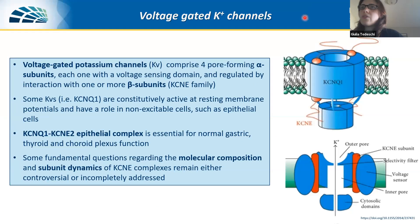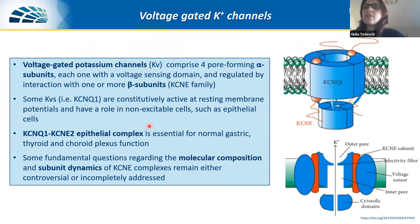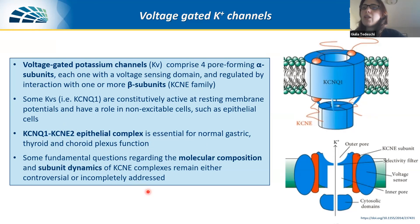A brief introduction to the voltage-gated potassium channel: they are formed by four alpha subunits, each with a voltage sensing domain, and they are regulated by one or more beta subunits. The channel we are interested in, KCNQ1, is constitutively active at resting membrane potentials and has a role in epithelial cells. The complex we studied — KCNQ1 as the main subunit and KCNE2 as a beta subunit from the KCNE family — is an epithelial complex essential for normal gastric, thyroid, and choroid plexus function. We were trying to address questions about the molecular composition and subunit dynamics of this channel.